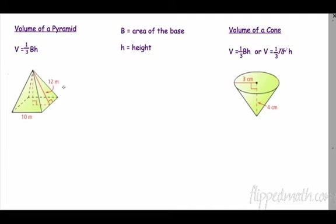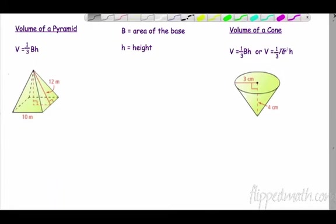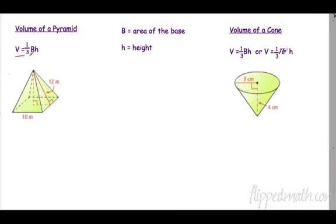If you do the same with a cone, you should find that the relationship is there are three pyramids of volume for every prism. So the formulas are pretty standard — it's going to be the same formula as a prism, but for a pyramid it's one-third of the area of the base times the height.